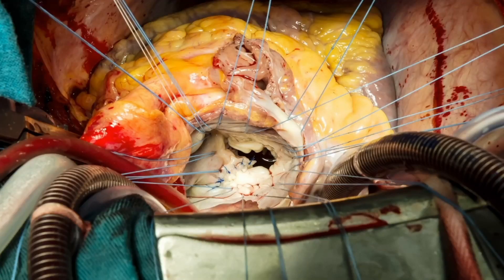The mitral valve, seen here from a surgical perspective, is a complicated structure and comprises not just the mitral valve leaflets but also the annulus, the chordae tendineae and the papillary muscles.